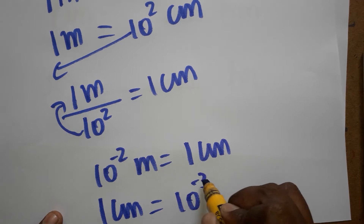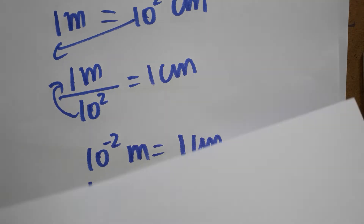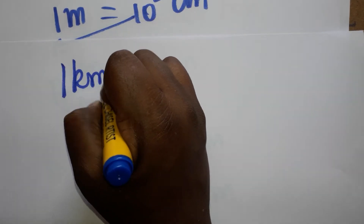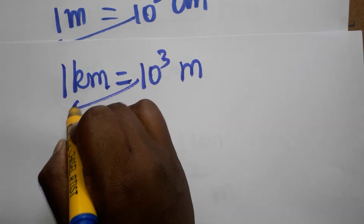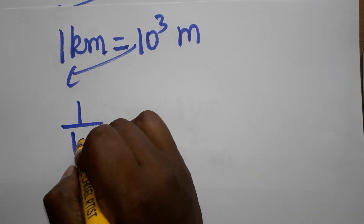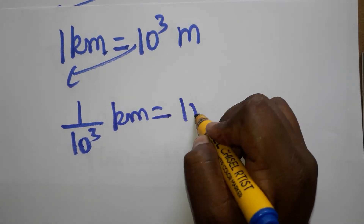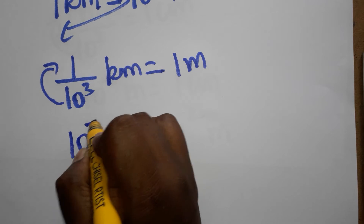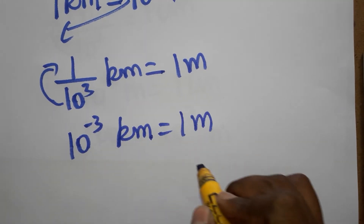Now, one kilometer is equal to 1000 meters, so one kilometer is equal to 10^3 meters. Bringing 10^3 to the denominator: 1 divided by 10^3 kilometer is equal to 1 meter. Taking it to the numerator: 10^-3 kilometer is equal to 1 meter.